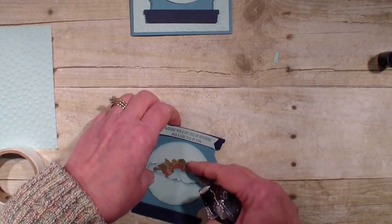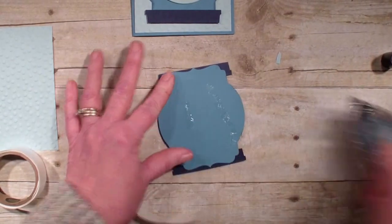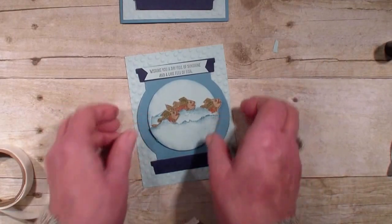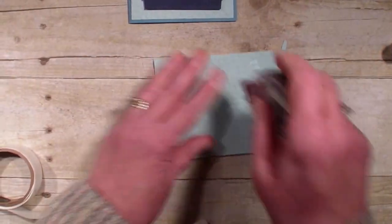I want that fish down a little bit. Adhere that to a four inch by five and a quarter. This is Pool Party, and I've already run it through the decorative dots embossing folder.